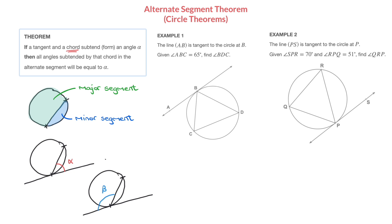As the name of this theorem suggests, we're dealing with the alternate segment. Given a tangent which passes through the endpoint of a chord to a circle, the segment referred to as the alternate segment depends entirely on which of the two angles we're considering. If we're considering angle alpha, then the alternate segment is the one highlighted in green — the one that isn't inside the angle we're considering. For angle beta, the alternate segment would be the smaller one.